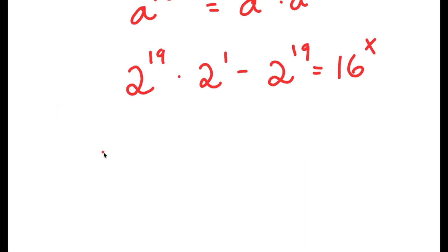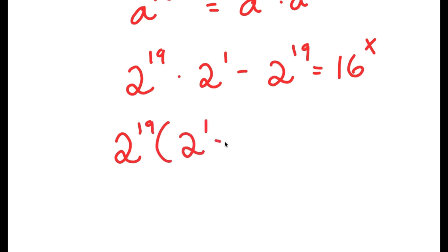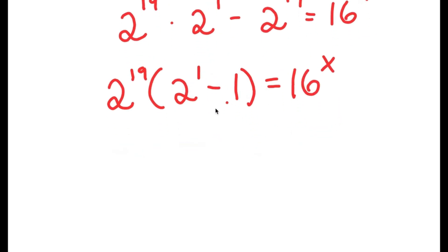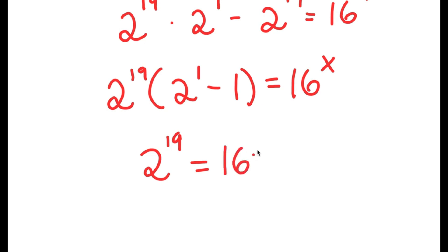From here, if I factor out 2 to the power of 19 from my left hand side, I get 2 to the power of 19 times 2 to the power of 1 minus 1 is equal to 16 to the power of x. And 2 to the power of 1 minus 1, that's simply equal to 1, and anything times 1 is itself. So I have 2 to the power of 19 is equal to 16 to the power of x.